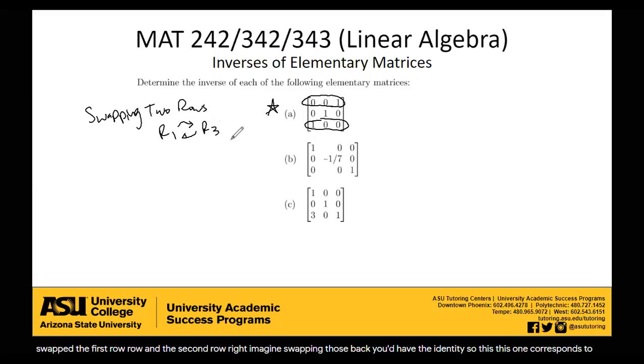That's what this elementary matrix corresponds to, specifically swapping row one with row three. So if you had any three by three matrix and you multiplied by this guy, the result of that multiplication would be the matrix you started with, but with the first and third rows swapped. So if we think about this, we're swapping the first and third row. How could we undo that operation? That's what the inverse essentially does. Well, what if we just swap the rows back? If we just swap the rows back, we'd be back to where we started. So that's what the inverse would be.